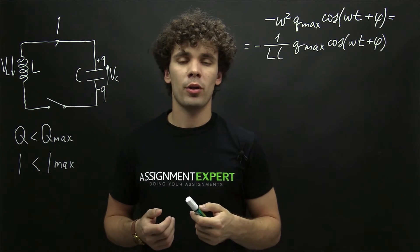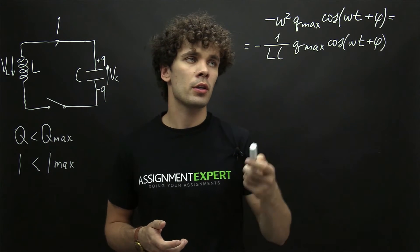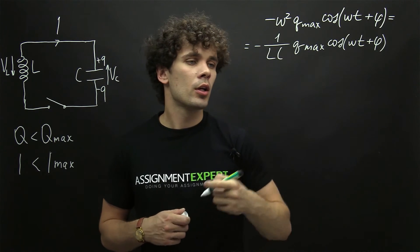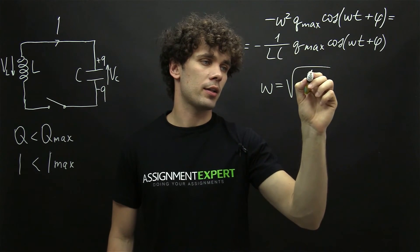So here is this big formula we obtained previously. And here basically everything cancels out except the angular frequency. So we have omega equals the square root of one over LC.